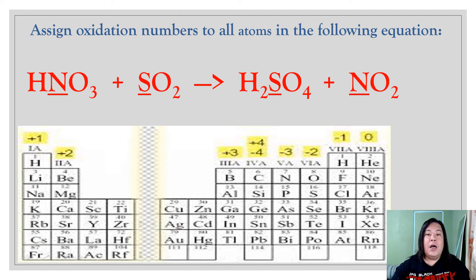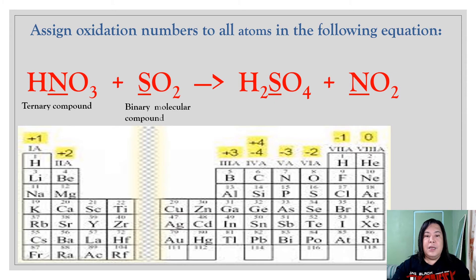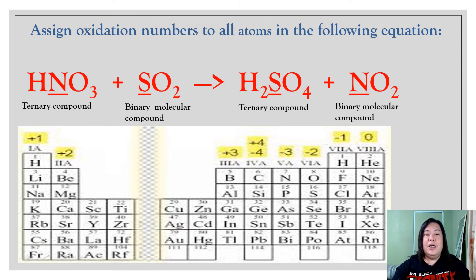Let us analyze what type of compound is present in this given equation. The first chemical formula is nitric acid (HNO3) — we call this a ternary compound. Followed by sulfur dioxide (SO2), which is a binary molecular compound. This yields sulfuric acid (H2SO4), also a ternary compound, and nitrogen dioxide (NO2), a binary molecular compound.